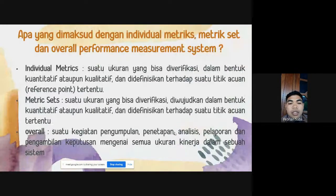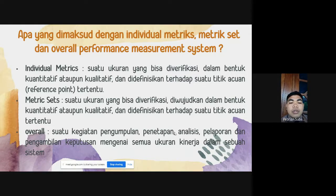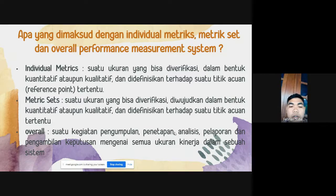Untuk pengertian Individual Matrix, yaitu suatu ukuran yang bisa diverifikasi dalam bentuk kuantitatif atau kualitatif, dan didefinisikan terhadap suatu titik acuan atau reference point tertentu. Sedangkan untuk Metric Set, itu disebut suatu ukuran yang bisa diverifikasi, diwujudkan dalam bentuk kuantitatif ataupun kualitatif, dan didefinisikan terhadap suatu titik acuan.